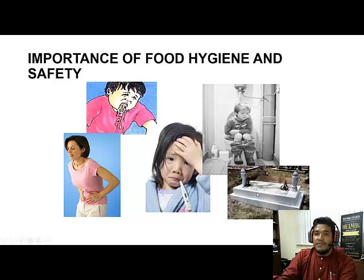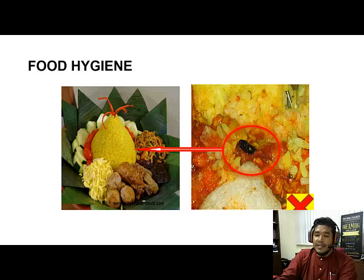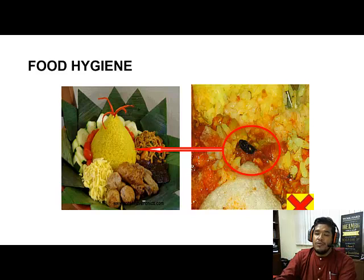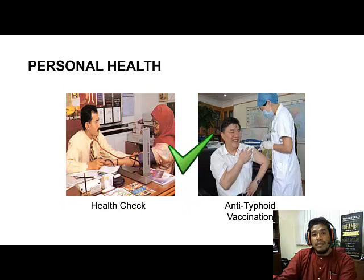If you look at this picture, we've always been served with food that looks very delicious, but it doesn't mean that it's safe. It is your responsibility as a food handler to make sure that the food looks good and delicious but is also safe to consume. As you can see here, there are flies inside the food, which is one of the main reasons that can contaminate food and lead to food poisoning.